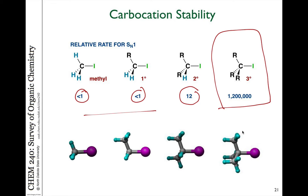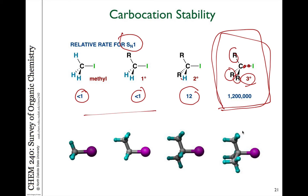Why is the tertiary substrate so much more reactive? In order to break the carbon-halogen bond and generate a carbocation, you need to stabilize the carbocation. Tertiary carbocations are much more stable than secondary, much more stable than primary, much more stable than methyl carbocations. So the rate of SN1 reactions has everything to do with the ability to stabilize the positive charge on the carbon. Essentially, only tertiary compounds are capable of undergoing easy SN1 reactions.